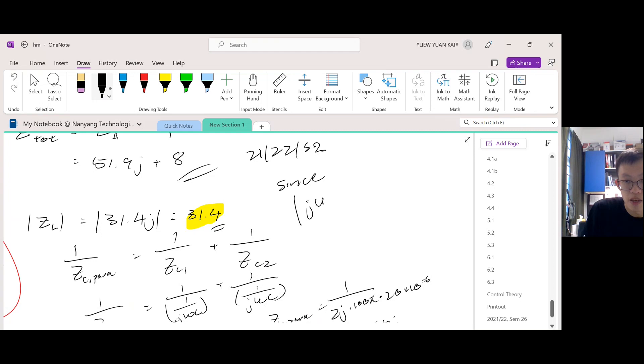Since they don't match, since j omega L_total is not equal to one over j omega C_total, or in other words, Z of L_total is not equal to Z of C_total, then you say they are not at resonance.